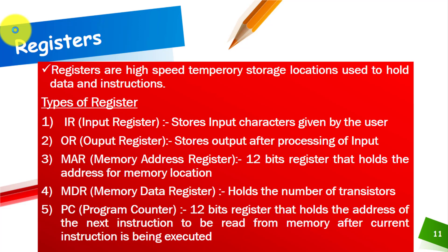Next we have the Output Register, which stores the output after processing of the input. When you give the computer certain input, it processes that input and the resulting output is stored in the output register. Next is the MAR, or Memory Address Register, which is a 12-bit register that holds the address of a memory location. Next is the MDR, or Memory Data Register, which holds the number of transistors.